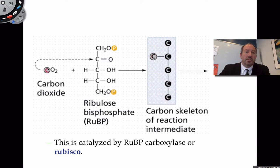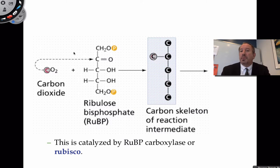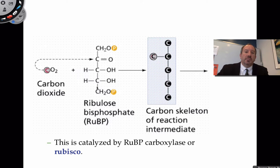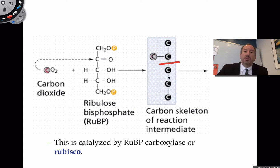In carbon fixation, CO2 is fixed — meaning it's stuck — to an already present sugar in the stroma called ribulose bisphosphate, sometimes called RuBP. It's a five-carbon sugar, a ketone, with two phosphates. When you stick a carbon onto a five-carbon sugar, you produce a six-carbon molecule. This is called an intermediate because it quickly fractures into two three-carbon molecules.